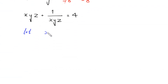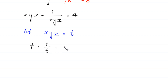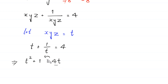Now we suppose that xyz equals t. So the equation becomes t + 1/t equals 4. Multiplying both sides by t gives t² + 1 equals 4t. Moving 4t to the left-hand side gives t² minus 4t plus 1 equals 0.